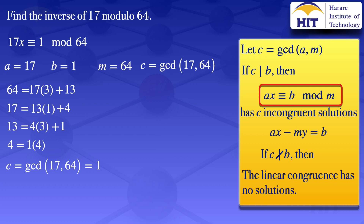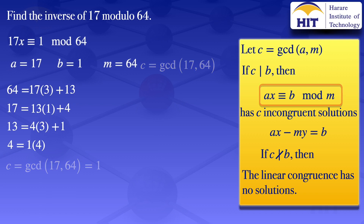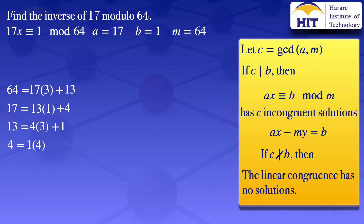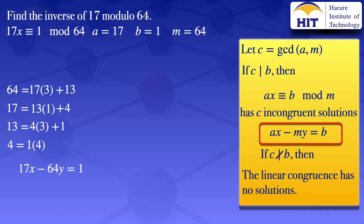We check if C divides B. Our B is 1, so we have 1 divides 1, therefore we have 1 incongruent solution. Now to find our value of x, we look at the equivalent equation Ax minus My equals B. With A=17, B=1, M=64, our equivalent equation is 17x minus 64y equals 1.